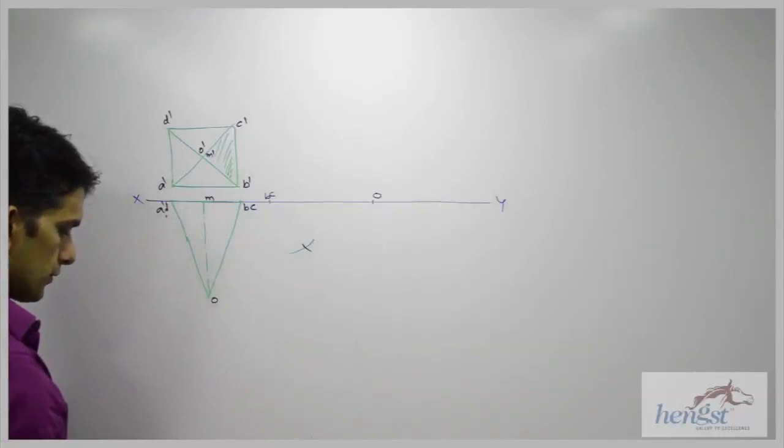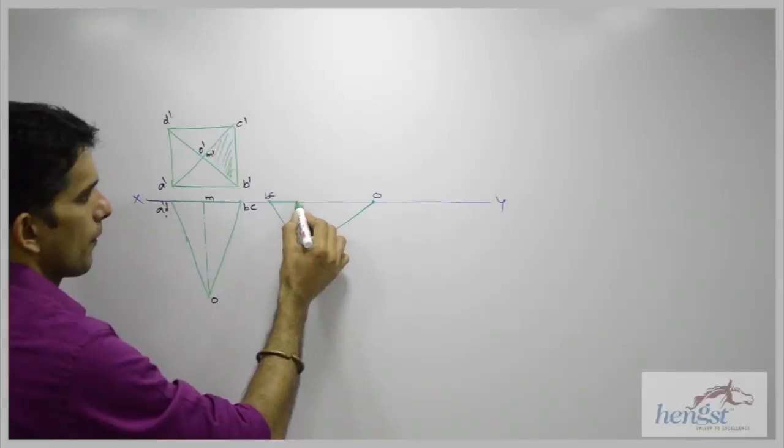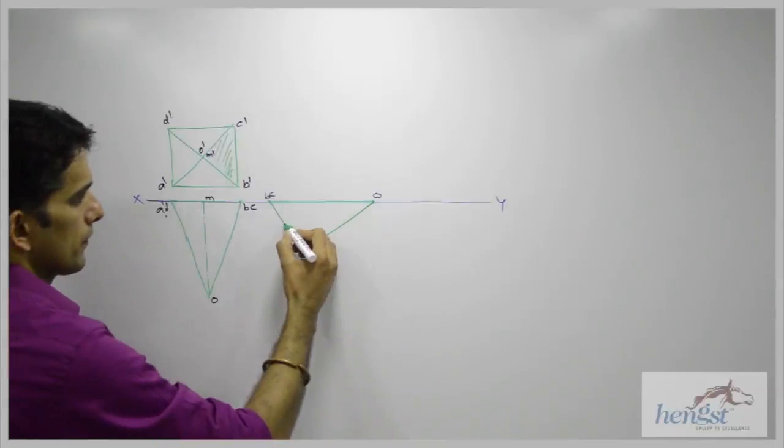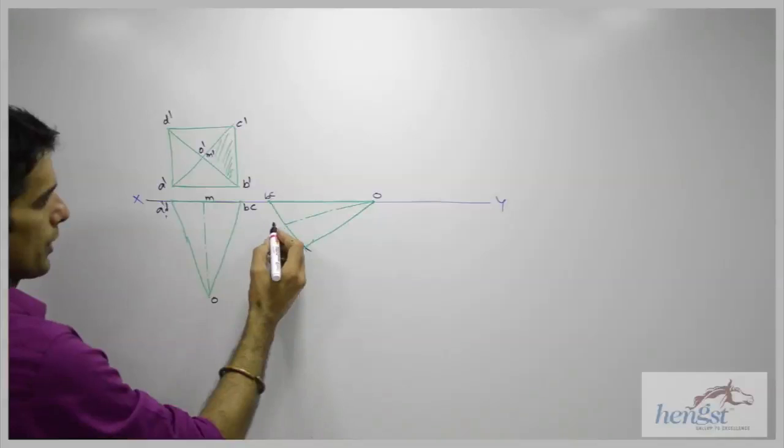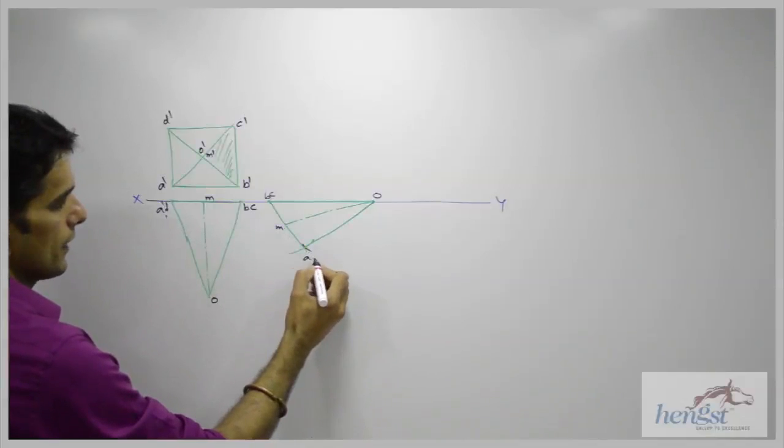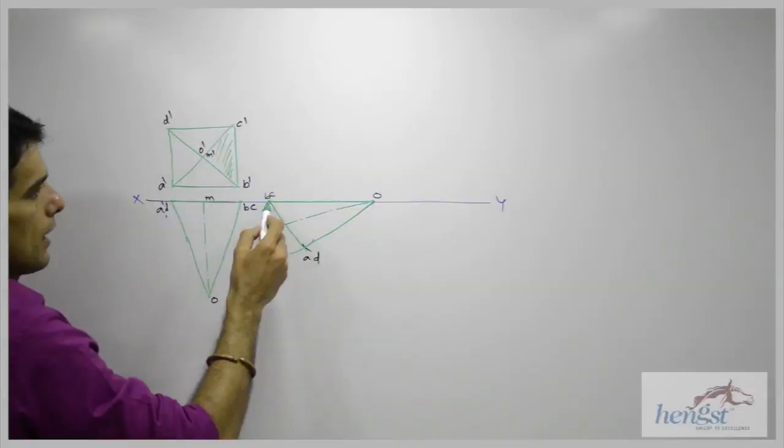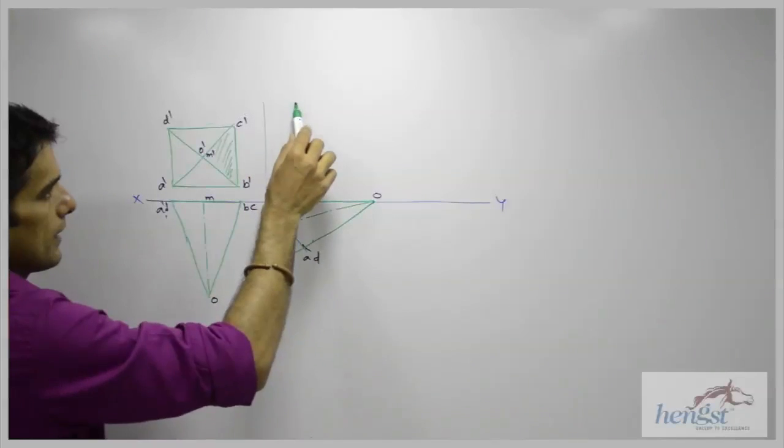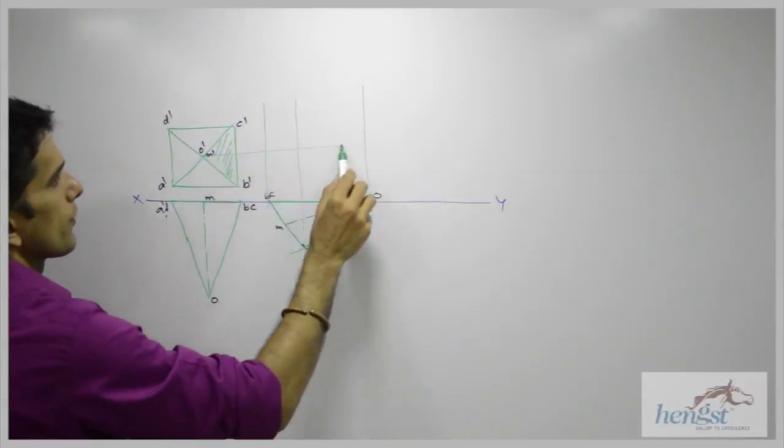So when you draw, it will be like this. This is the axis. So we have got point M, this is A and D. Now what we need to do, we need to extend this. I will extend B, C from here and AD from here and O from here.